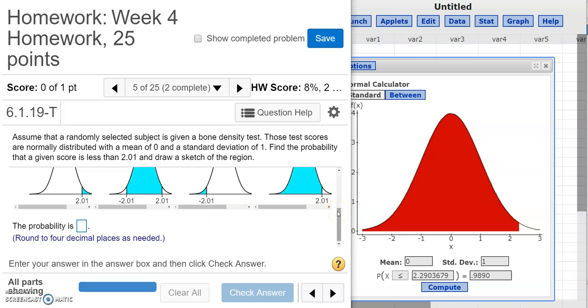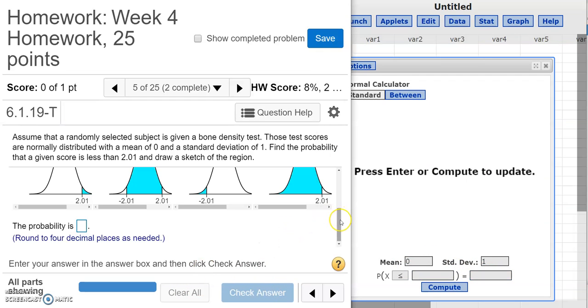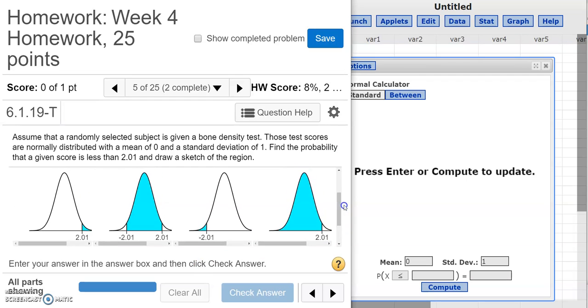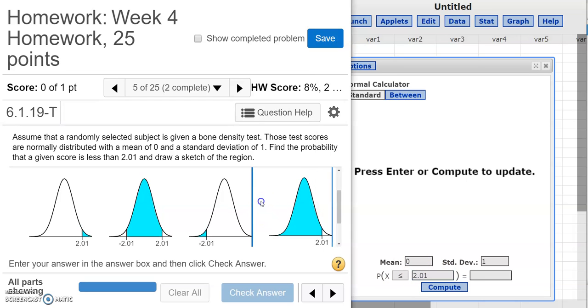And now we actually need to find what that area is. So for this, we're going to go over to our StatCrunch. Again, first, we need to put in the mean and standard deviation. Well, conveniently here, the mean was zero and the standard deviation was one. So I can leave those as is. I'm going to go ahead and clear these sections that we had before. So in this case, the question isn't giving me the area like it did in the last example. This area right here, we don't know what that is. In fact, that's what we're trying to find. What we do know is we know the value here on the bottom horizontal axis. That value is 2.01. So that value goes right here, 2.01.